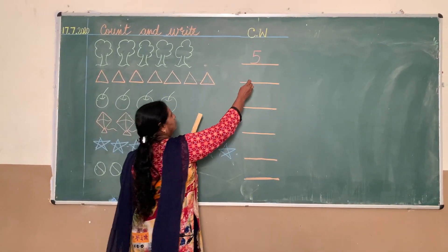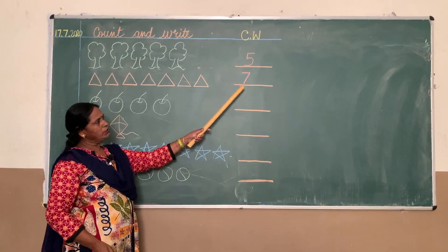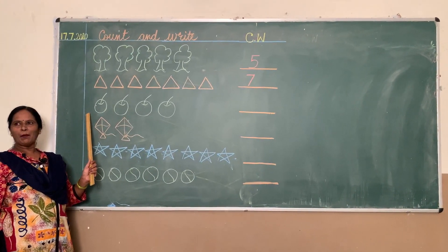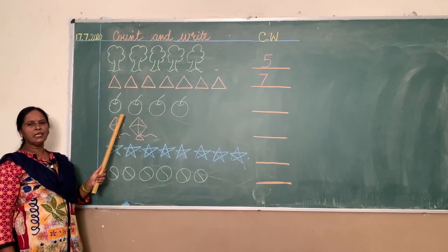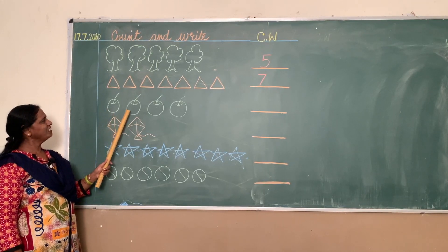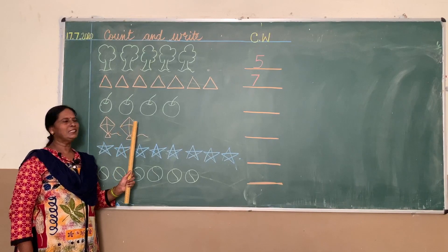Now next are apples. How many apples are there? These are green apples. One, two, three, four. How many apples? There are four apples, so you write four here.